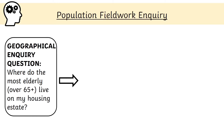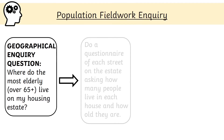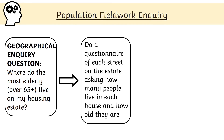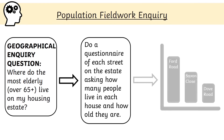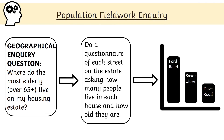A geographical inquiry question is a question that can be answered with data. For instance, we could ask: 'Where do the most elderly people live on my housing estate?' We would then follow the fieldwork inquiry process, collecting questionnaire data from each street on the estate asking how many people live in each house and how old they are, and answer the question with the data — for example, this graph shows that Ford Road had the most elderly residents.